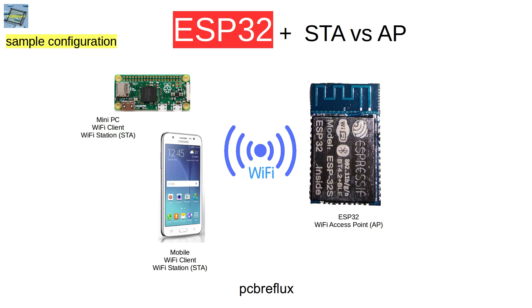In contrast to this, we can also use our ESP32 as an access point. In this configuration, we have no access to the internet, but we can use our access point also as a web server, and all the network traffic in this small Wi-Fi network can reach all the other stations and also the web server on the ESP32. There's no need for another Wi-Fi network, so we can use this out of the box without any configuration — we just switch the ESP32 on and we have access to our Wi-Fi network.